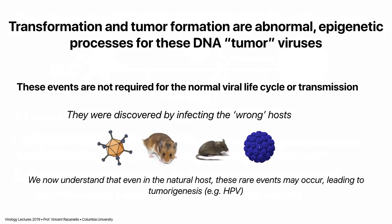Transformation and tumor formation are rare, abnormal events for these DNA tumor viruses. Forming a tumor or transforming cells is absolutely not required for virus reproduction. They're not required for the normal life cycle or transmission. And what's amazing is that these effects were discovered by infecting the wrong hosts with these viruses. It goes to show you that if you propose an experiment and someone says it's crazy and doesn't make any sense, you should do it anyway — because it might turn out to be a good result in the end.